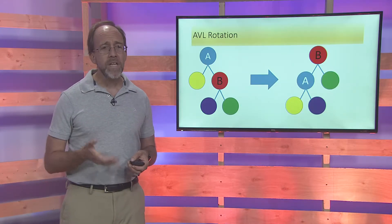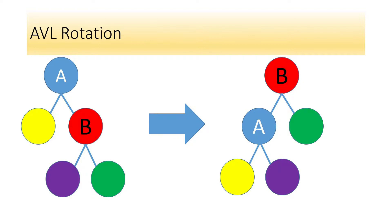In an AVL tree, if it gets out of balance, it balances itself. It calculates the height of any individual set of nodes, and if it finds nodes that are out of balance, it performs a balancing act using that rotation — everything maintained and done in place. Here's what an AVL rotation looks like with colors: the blue node, which is the root on the left-hand side, becomes the left child of the red, which is now the root on the right-hand side.